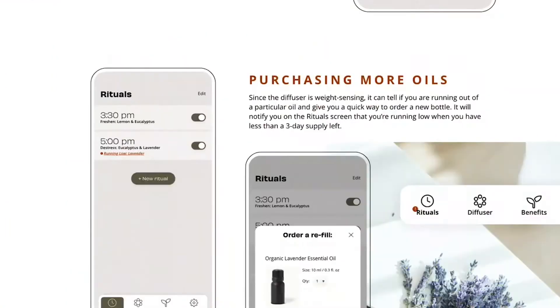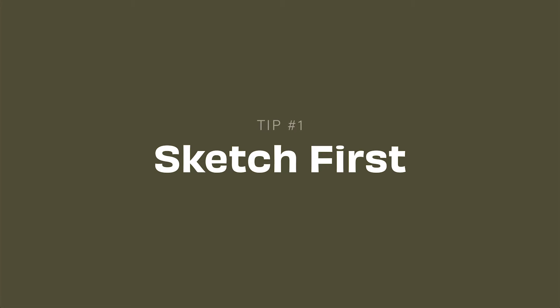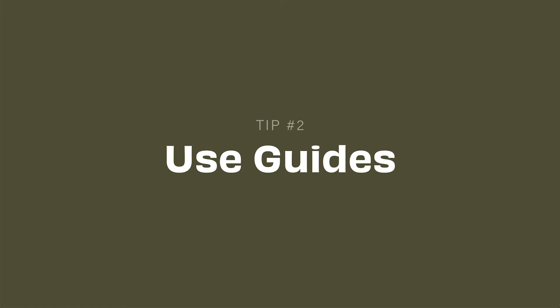My first tip is to sketch first. Before you even move into Adobe XD or anything like that to start creating your wireframes, I would highly recommend going through a bunch of sketching first. The reason this is so important is because you can be much more flexible and iterative when sketching versus wireframing. When wireframing, you really already have things planned out. When sketching, you should be going through tons of different ideas and landing on the one that works best — and the fastest, most effective way to do that is just with a pencil and paper.